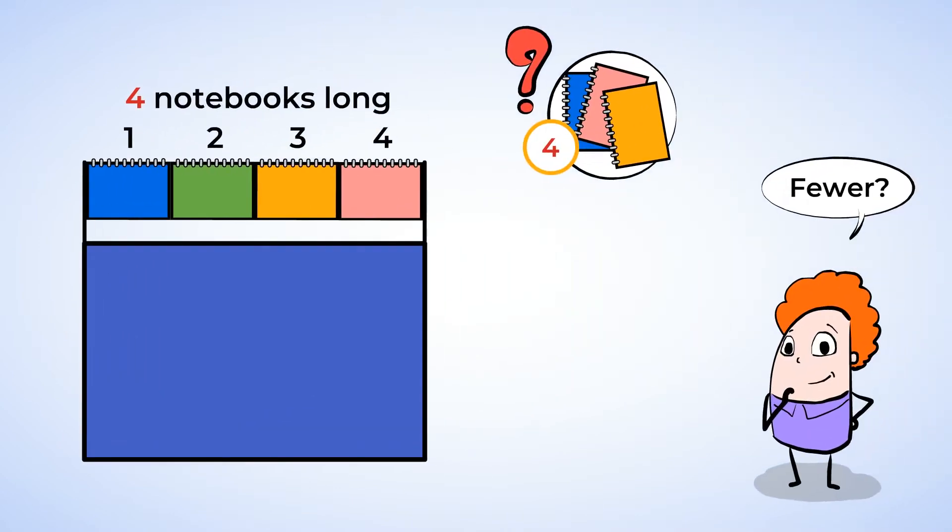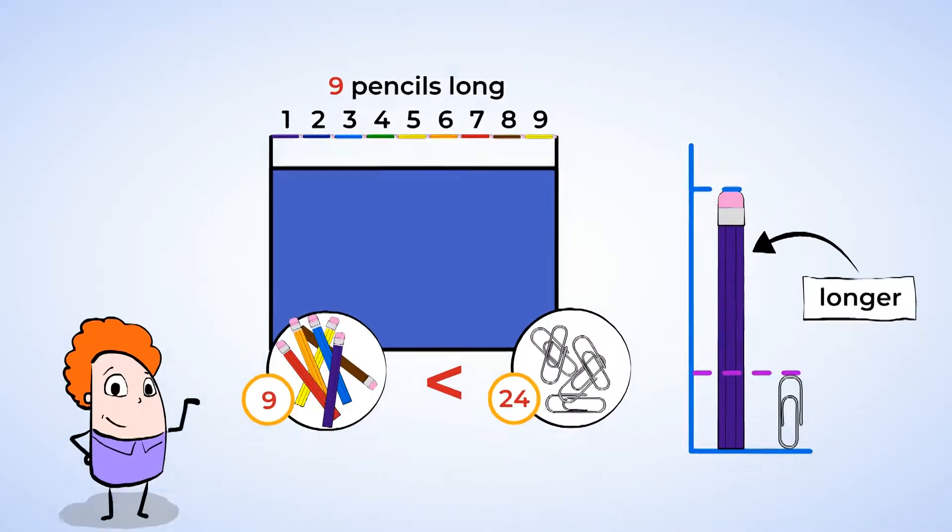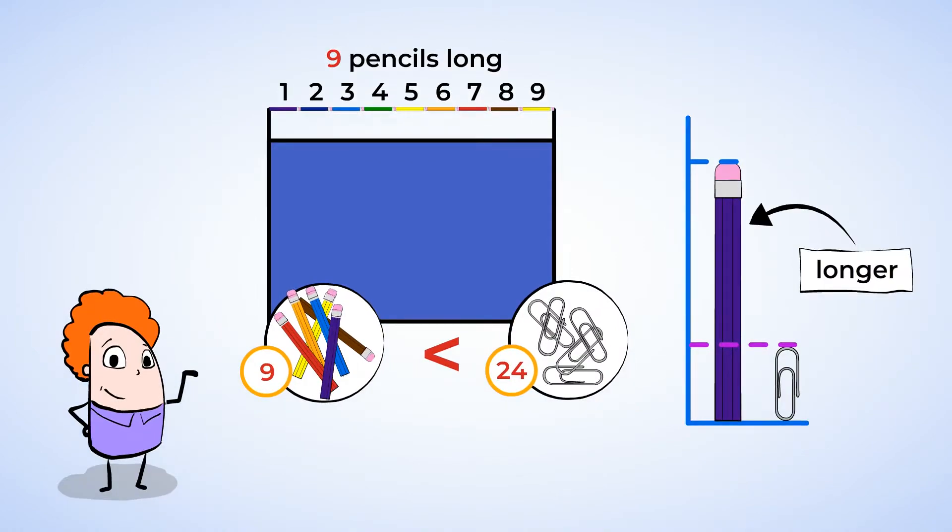If we use big units like a notebook, we're going to need fewer of them. And if we use small units like paper clips, we'll need more of them.